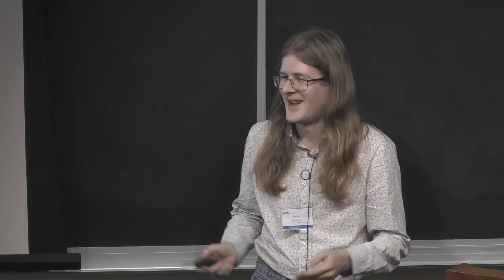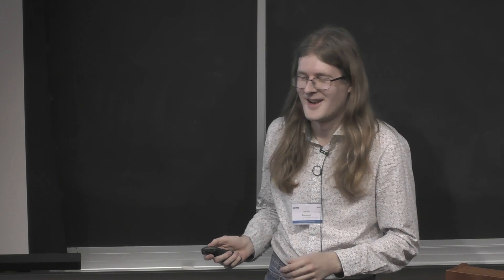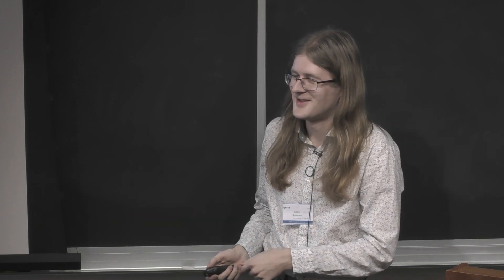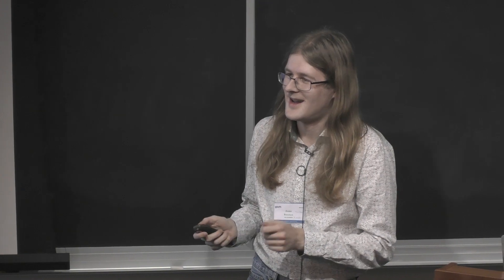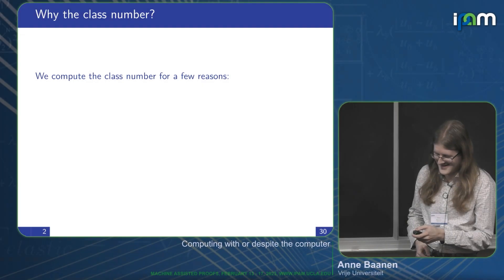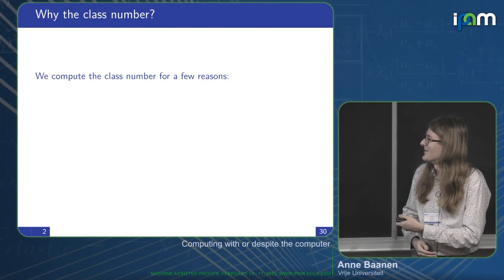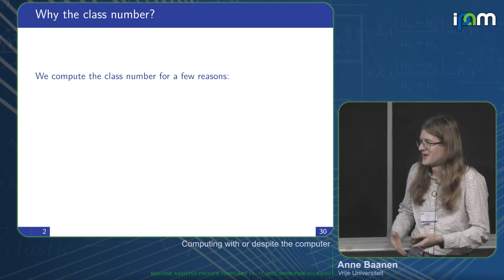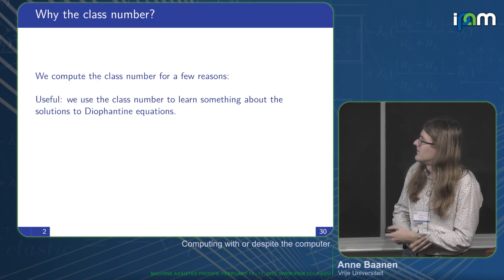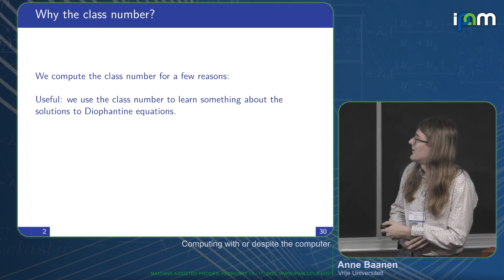So why do we even want to bother with this class number? It's a very common exercise in a number theory course — you give it to students, maybe an hour later they're done. Sage can do it for us in under a second. There's really no doubt that we need Lean to be sure the answer is correct, so for verification this is completely unusual because we are already so certain it's correct.